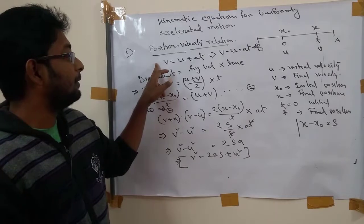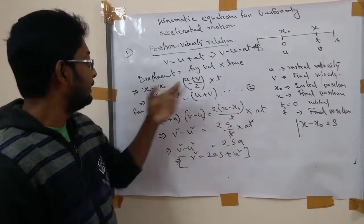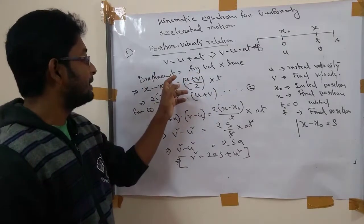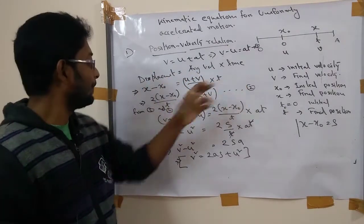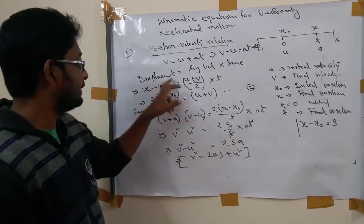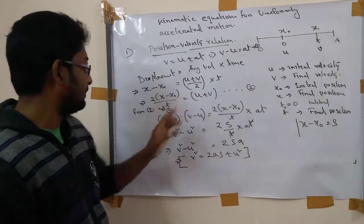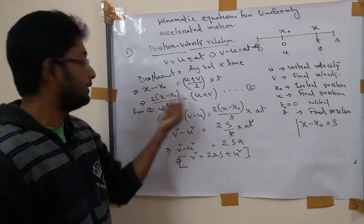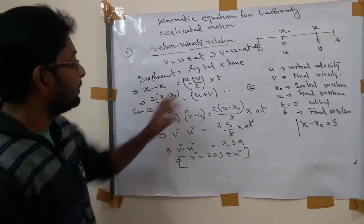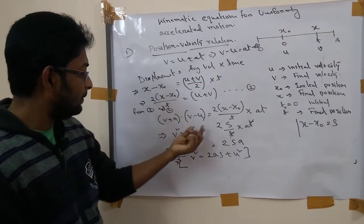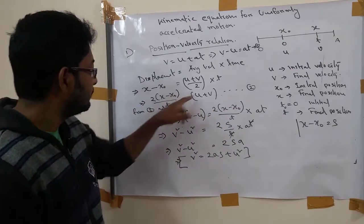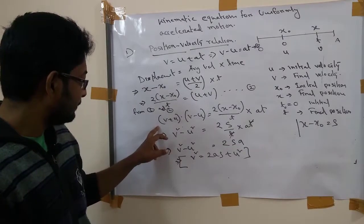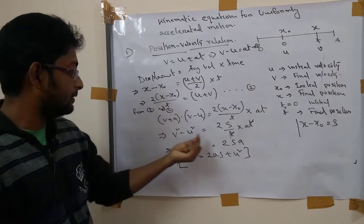First I take the formula for velocity time relationship. Then we know that displacement equals average velocity into time. Put the displacement x minus x naught, average velocity is this, and the time. Now I just rearrange this. I get u plus v equal to this one. When equation 1 and 2 are multiplied, I get u plus v, v minus u, then 2 times x minus x naught into at.